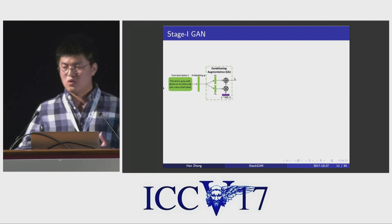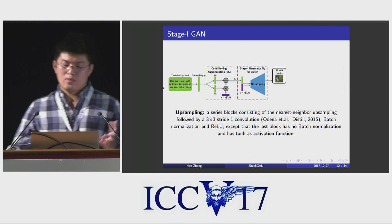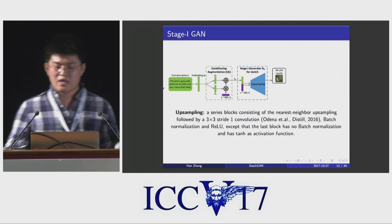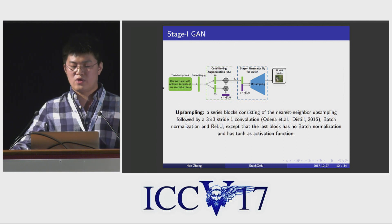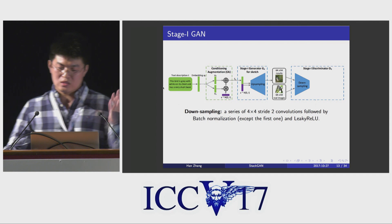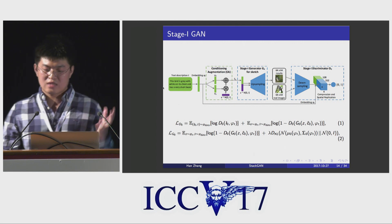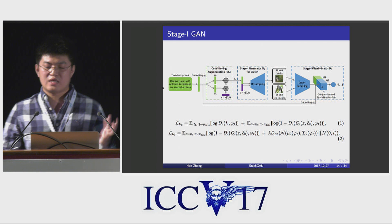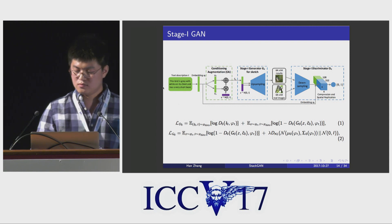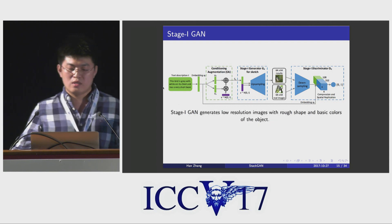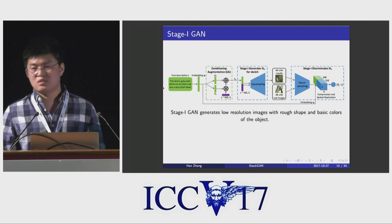Once we get the condition variable, we feed it through the Stage 1 GAN to generate the low-resolution image. The condition variable is first concatenated with the noise factor, then reshaped into 2D and fed through a series of up-sampling blocks to generate 64x64 images. The Stage 1 discriminator first encodes the image through several down-sampling blocks, then concatenates with the text embedding and feeds through more convolutions to get the decision score. At the end of training, Stage 1 GAN generates low-resolution images, but the samples usually contain shape distortions and lack some details.